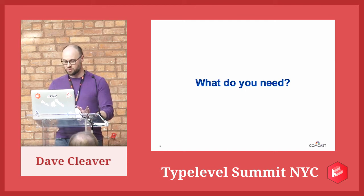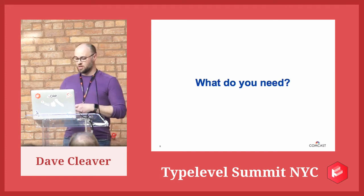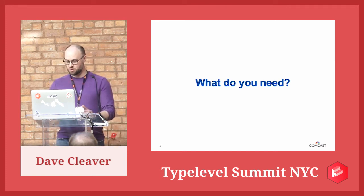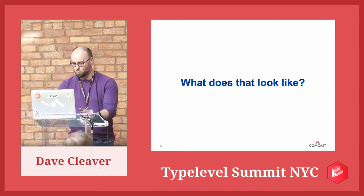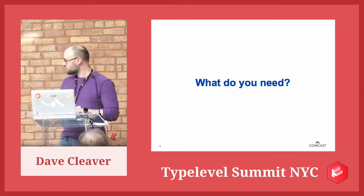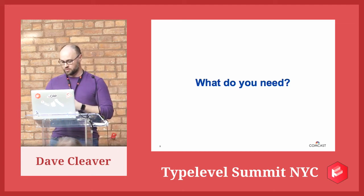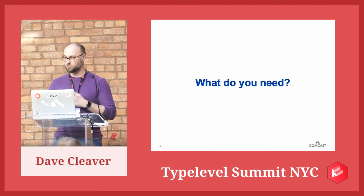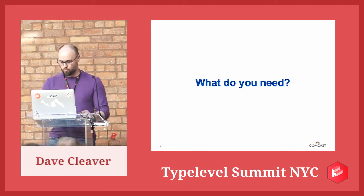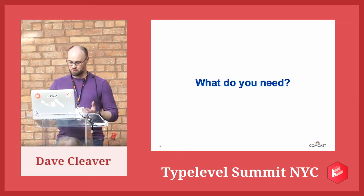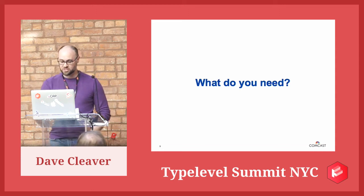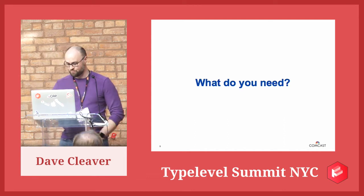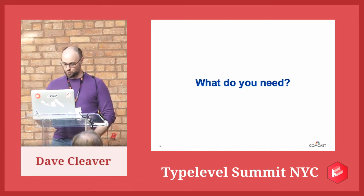We used the Cats library for most of our Free support — co-product, natural transformations, Kleisli, MonadError, all the useful functional abstractions. Kind Projector was critical — type lambdas are scary, and Kind Projector removes that scariness from your code. Not everyone on my team can write a type lambda. We were on Scala 2.11, so the SI-2712 fix was very important for us. If you don't have it, you should be using something that gets it for you.